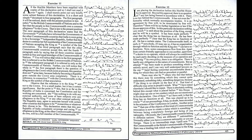I am placing the declaration before this Honourable House for its approval. Beyond this approval, there is no question of any law being framed in accordance with it. There is no law behind the Commonwealth. It has not even the formality which normally accompanies treaties. It is an agreement by free will to be terminated by free will. Therefore, there will be no further legislation or law if the house approves of this.